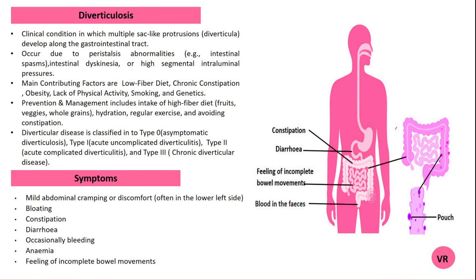Severe cases or complications like abscess, fistula, or obstruction may require hospitalization with IV antibiotics, drainage procedures, or surgery to remove the affected colon segment. For uncomplicated diverticulitis, mild cases, a short period of clear liquid diet is often recommended, followed by a gradual return to a high fiber diet. Oral antibiotics may be prescribed and over-the-counter pain relief such as acetaminophen or antispasmodics may be used.